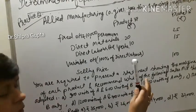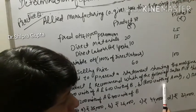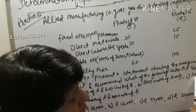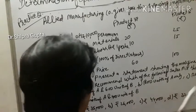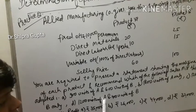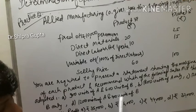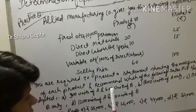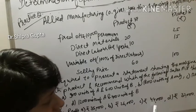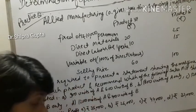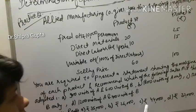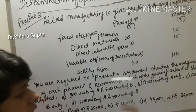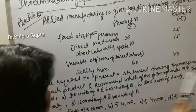First calculate contribution per unit for A and B, then multiply by units in each case and deduct fixed cost. Case A: 900 × A's contribution + 600 × B's contribution, minus Rs. 10,000 = Rs. 35,000 net profit. Case B: 1,800 × A's contribution, minus Rs. 10,000 = Rs. 26,000 net profit. Case C: 1,200 × B's contribution, minus Rs. 10,000 = Rs. 44,000 net profit. Case D: 1,200 × A's contribution + 400 × B's contribution, minus Rs. 10,000 = Rs. 32,000 net profit. Case C gives the highest net profit of Rs. 44,000, so we should adopt 1,200 units of B only.